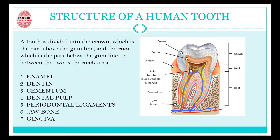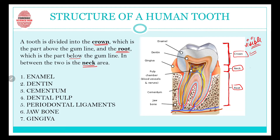Firstly, let's understand that our tooth is divided into three main parts: the crown area, the root area, and the neck area. The crown is the part above the gum line — the visible area we can see with our eyes. The root is the lower portion present below the gum line. The neck area is present in between the crown and the root.